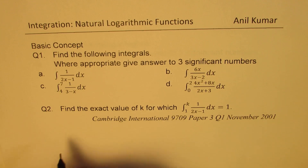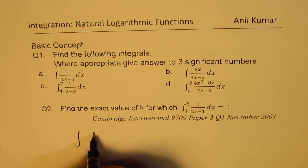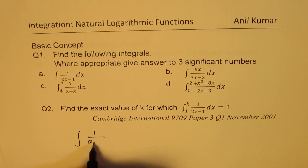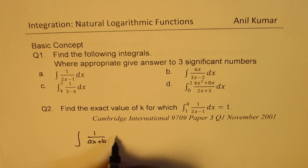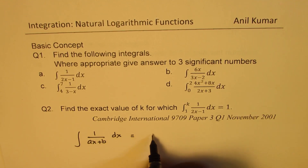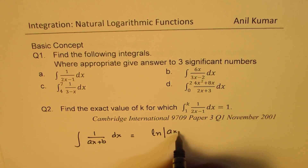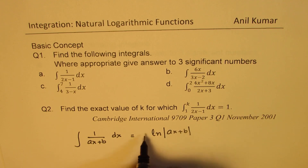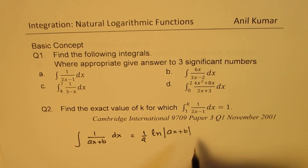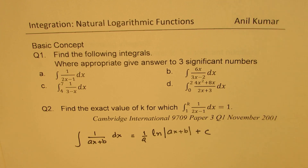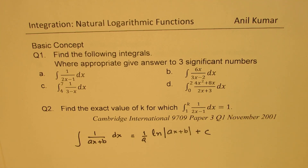As you know, the integral of 1 over (ax plus b) dx equals ln of the absolute value of (ax plus b), times 1/a, plus c. That's the formula which will be used to solve these questions. You can always pause the video, answer the question, and then look into my suggestions.